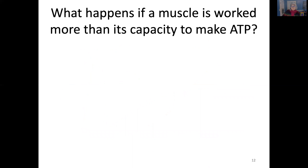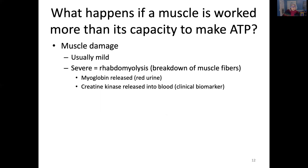What happens if a muscle is worked more than its capacity to make ATP? It can cause muscle damage, which is usually mild. But severe muscle damage from overwork is called rhabdomyolysis, or breakdown of muscle fibers. Myoglobin is released, causing red urine. Creatine kinase, as well as other proteins, are also released into the serum. Creatine kinase is a commonly used clinical biomarker of rhabdomyolysis.